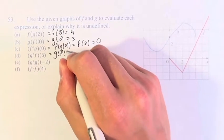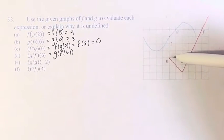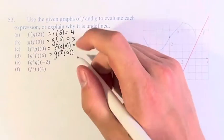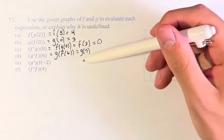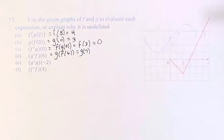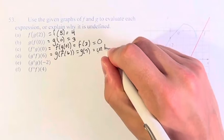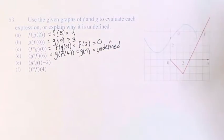Next we have g of f of 6. What is f of 6? Going to x equals 6, the y value is all the way up at 7. So this becomes g of 7. What is the g value at x equals 7? Well, it doesn't exist — the function g stops before that point, there's nothing over there. So this is undefined because g of 7 does not exist.